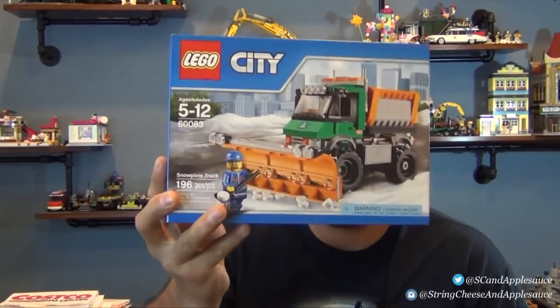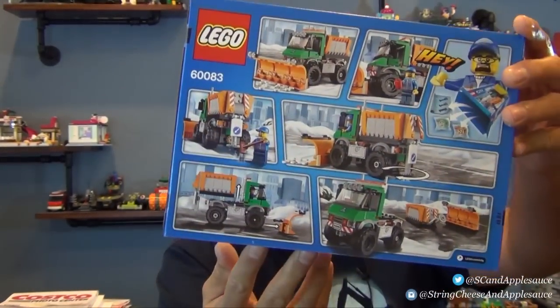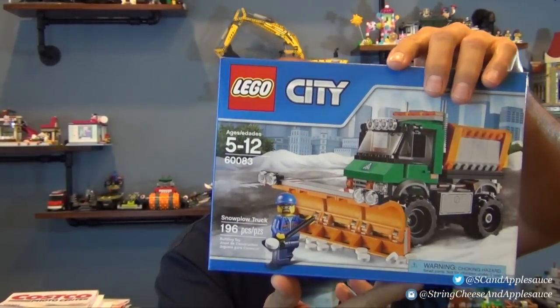Hey everyone, welcome back to Straight Cheese and Applesauce where today we're going to build this LEGO City snow plow truck. This is set number 60083, 396 pieces, and looks like one minifigure. So let's go ahead and bust it open and get to it.